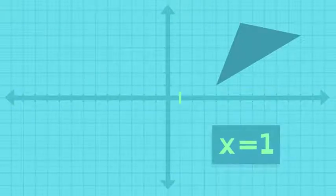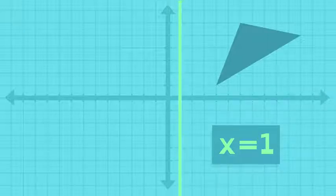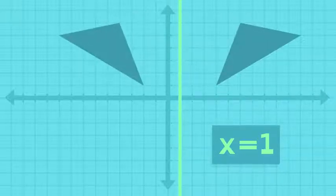You can even reflect a shape through a line using an expression such as x equals 1. In this example, the line x equals 1 is the line of reflection for the two triangles.